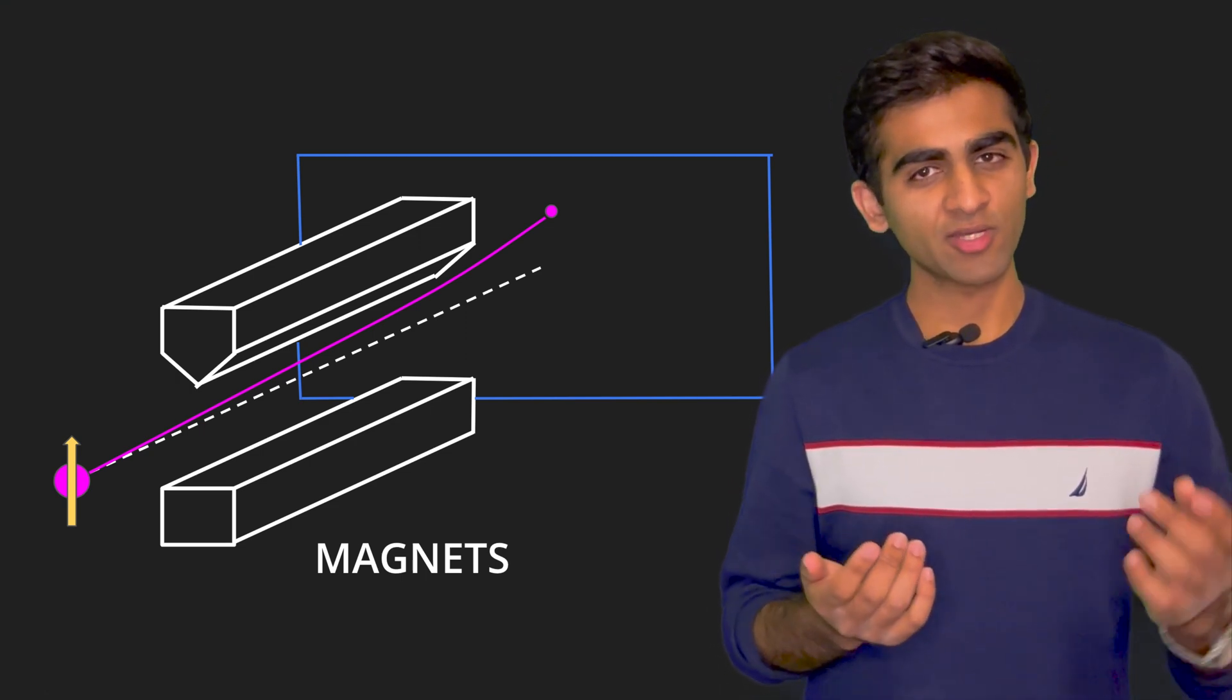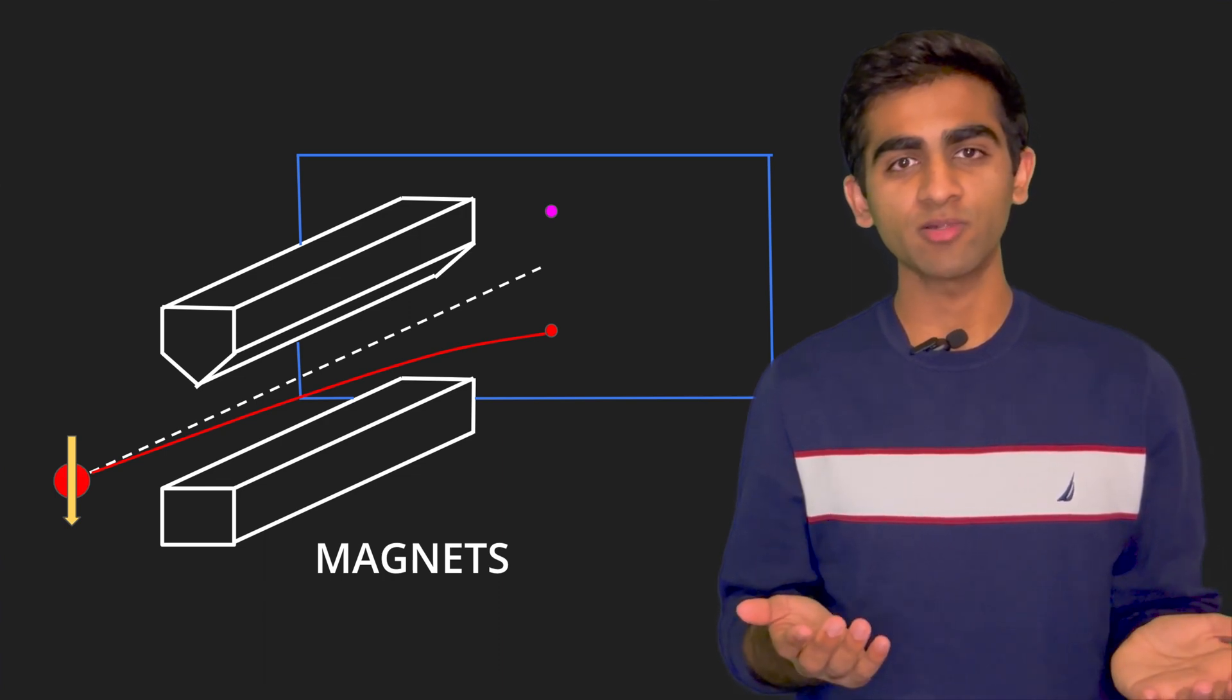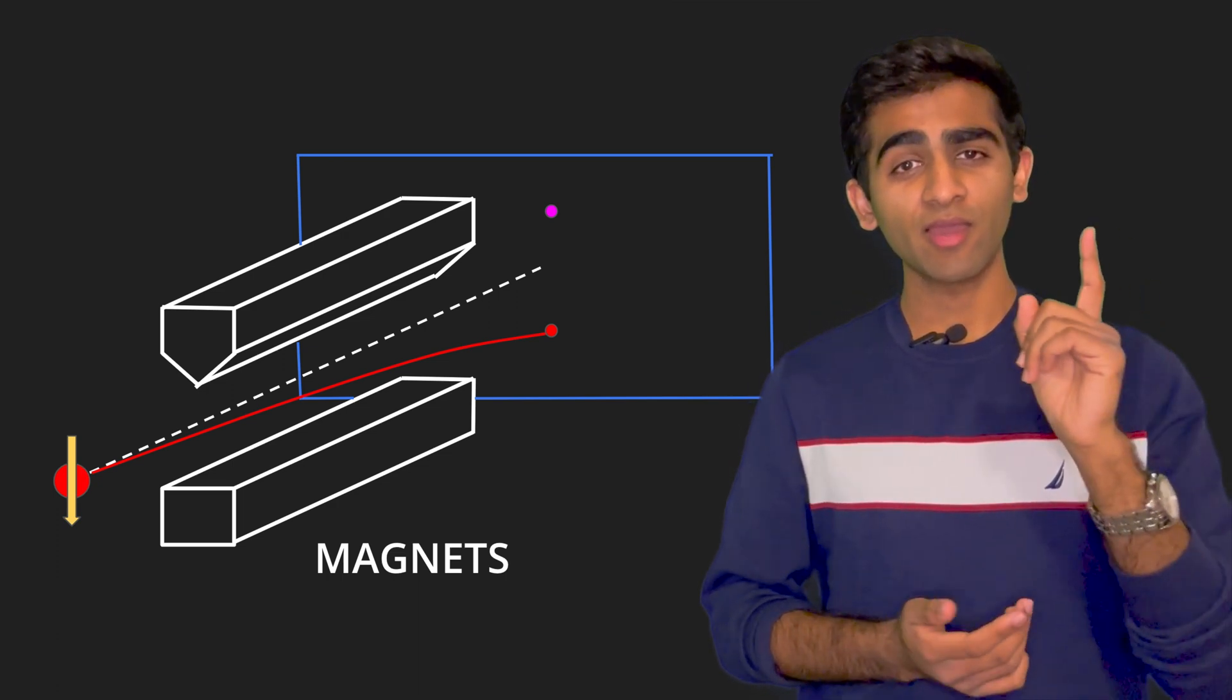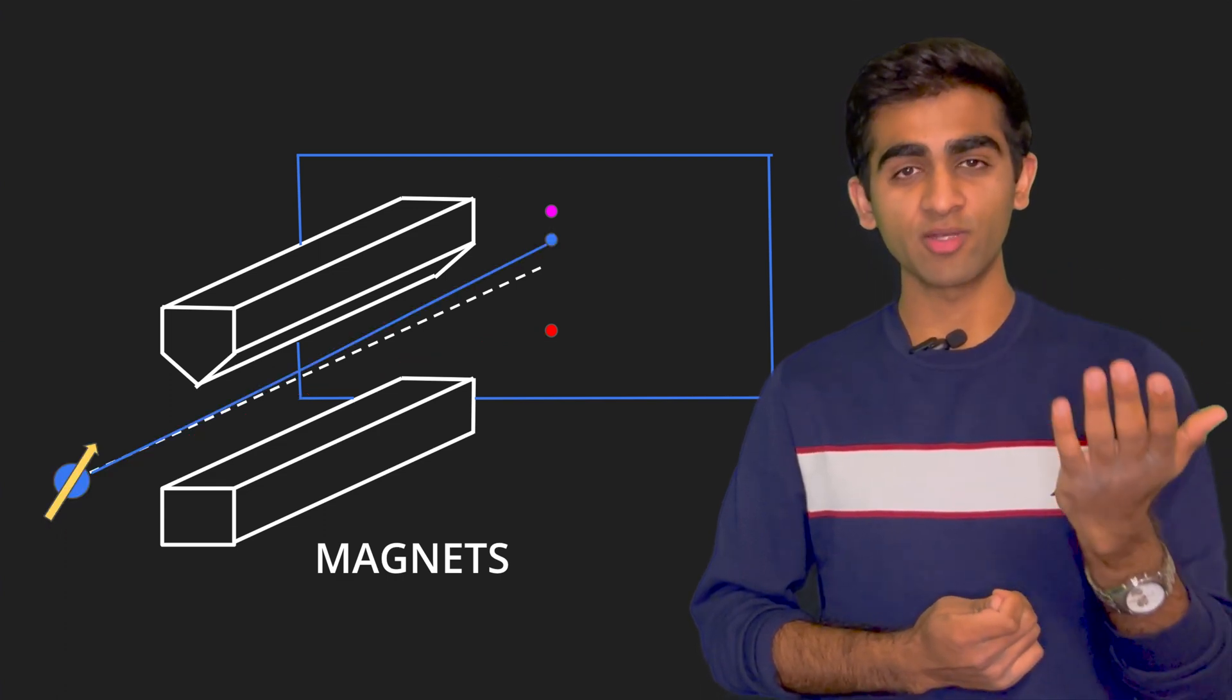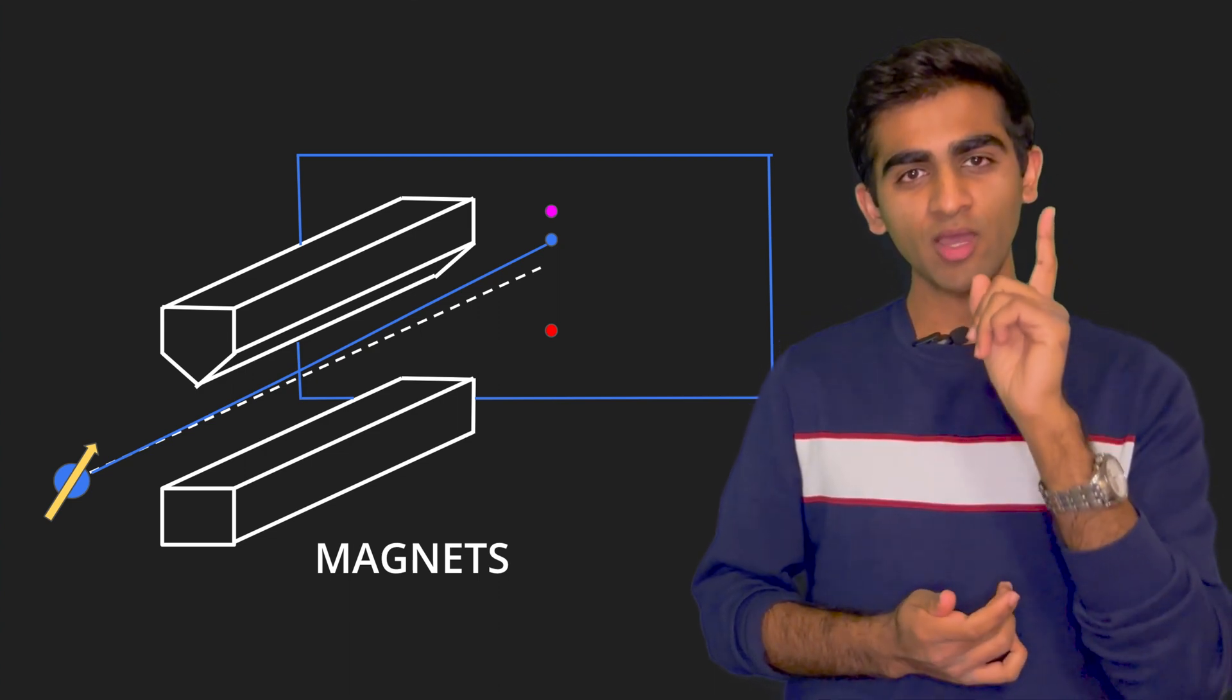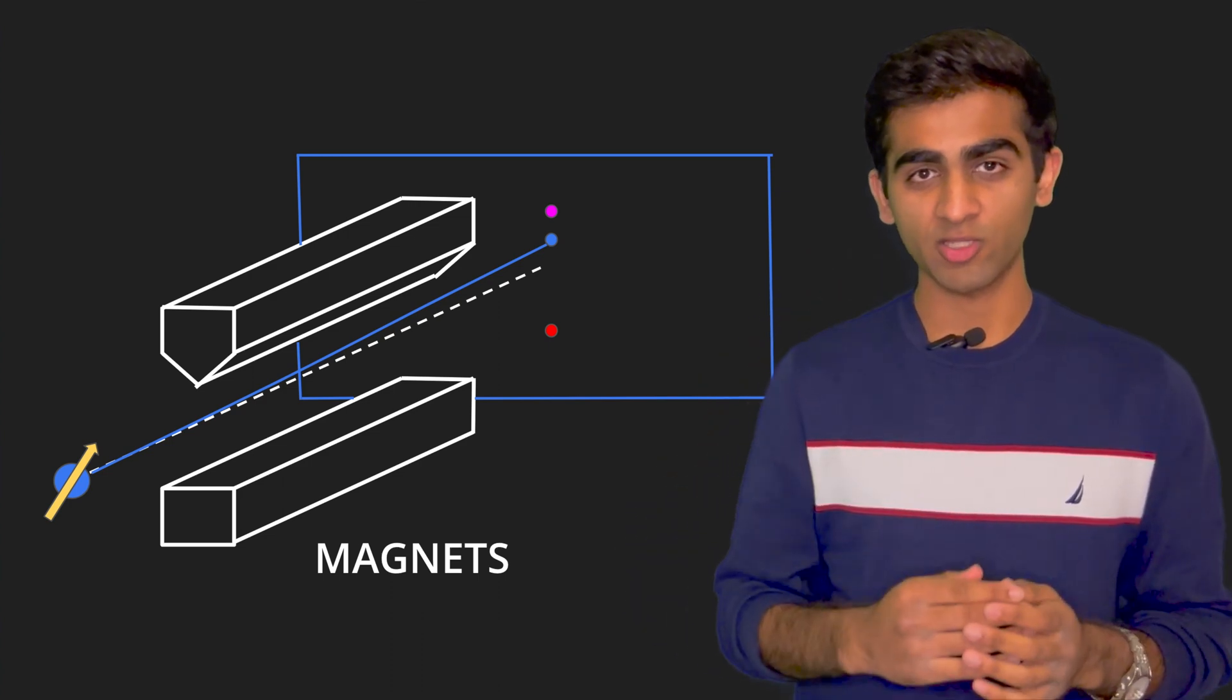Let's say we were to rotate the magnetic field of this particle by a slight amount from the upward direction. Now we would expect that this particle is deflected a little less than the true upward pointing magnetic field particle. So it hits the screen in between the middle and the highest mark possible.